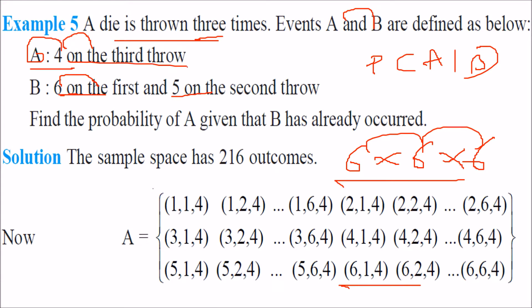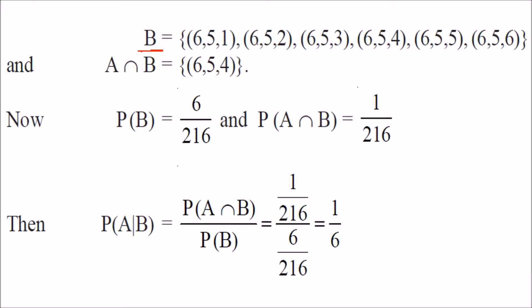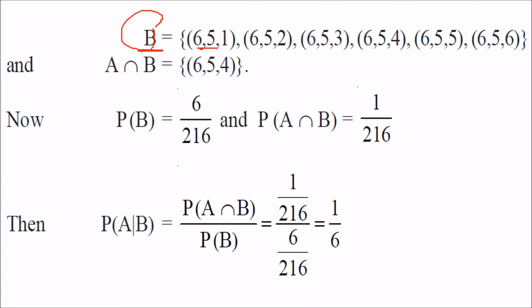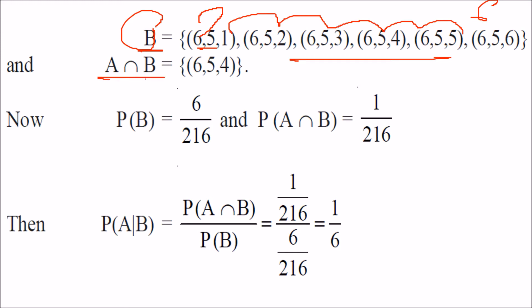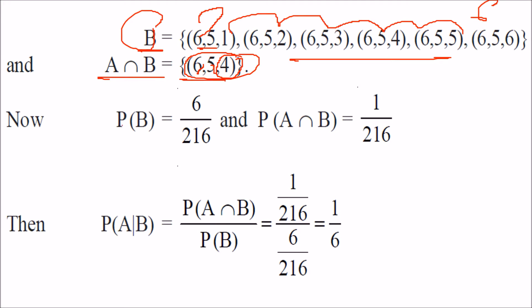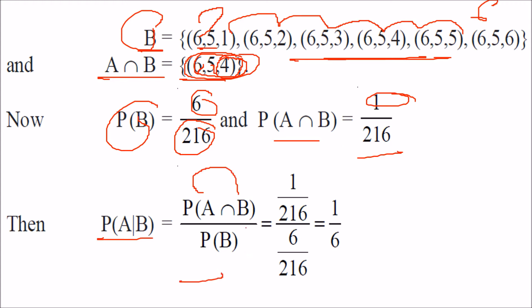B = {(6,5,1), (6,5,2), (6,5,3), (6,5,4), (6,5,5), (6,5,6)}, so P(B) = 6/216. A∩B = {(6,5,4)}, so P(A∩B) = 1/216. Therefore P(A|B) = P(A∩B) / P(B) = (1/216) / (6/216) = 1/6.